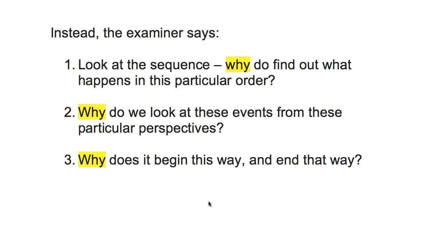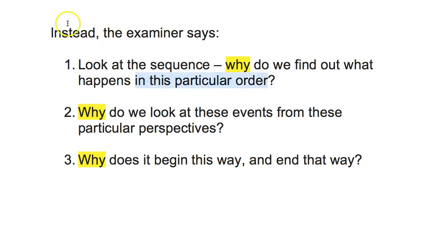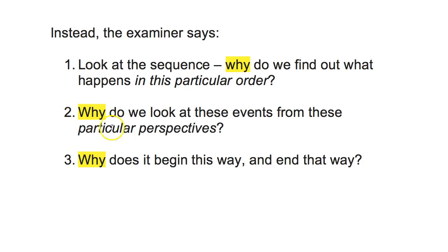In summary, you can get full marks on this question if you follow the examiner's three pieces of advice. First, look at the sequence: why do we find out what happens in this particular order - why structure it this way? Second, why do we look at these events from these particular perspectives - through the character's eyes, the author's eyes, or sometimes a different character? Third, why does it begin this way and end this way? If you write about all those things, you will get really high marks and can easily get full marks.